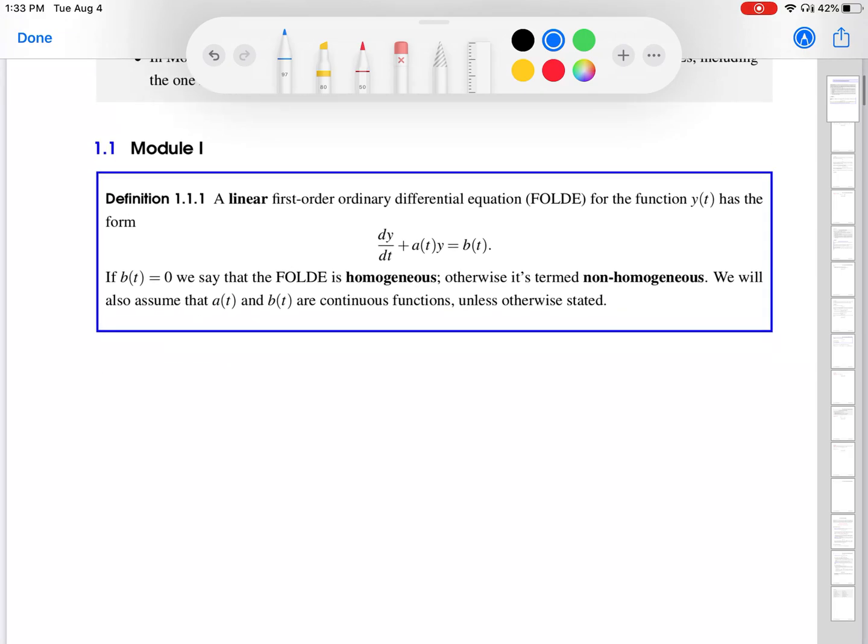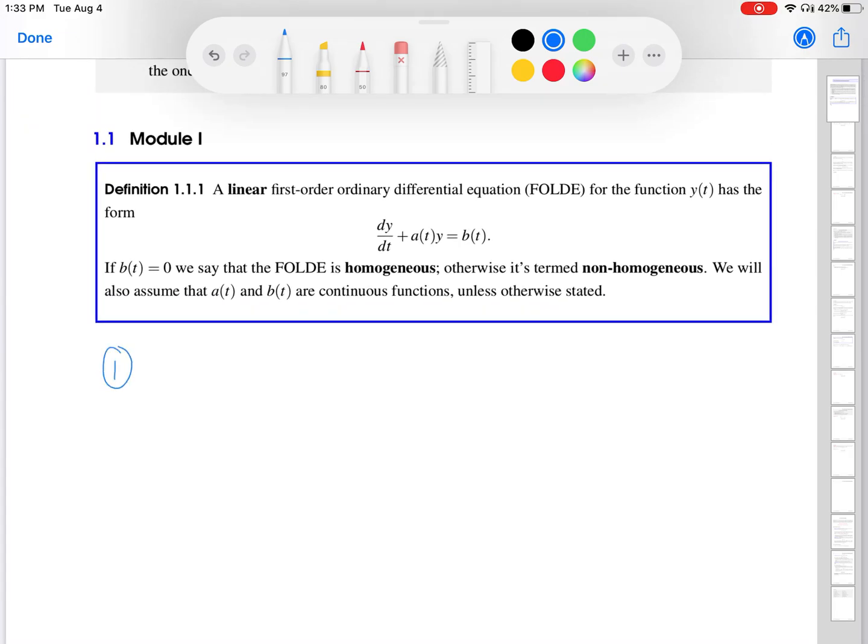We want to know which of these first order ODEs are linear, and then for those that are, which ones are homogeneous and which ones are non-homogeneous. So, the first thing I'm going to do is go back to the definition of what a first order linear ODE looks like and make a few observations there.